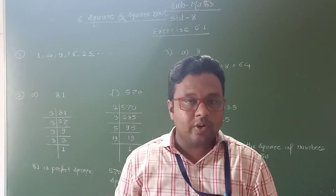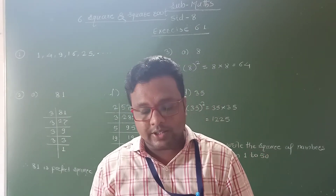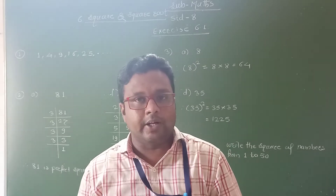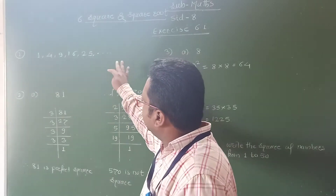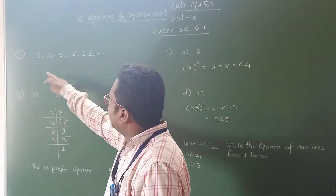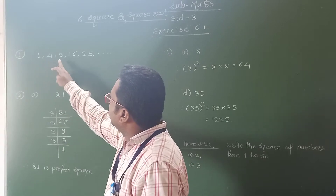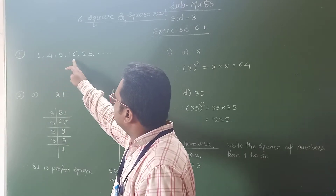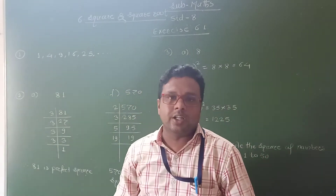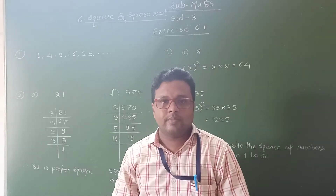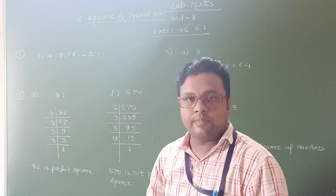Question number 1 is given: Write the next two numbers in the following pattern. The pattern of numbers given is 1, 4, 9, 16, and 25. If you observe these numbers, we understand these are the perfect square numbers.